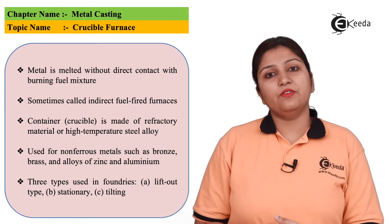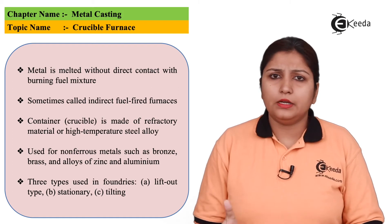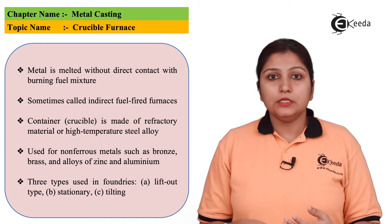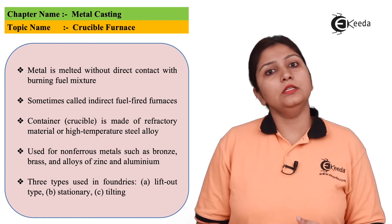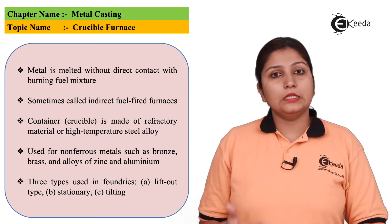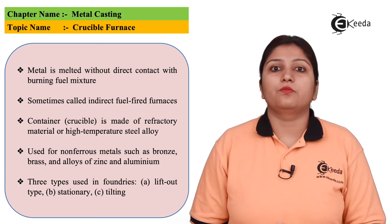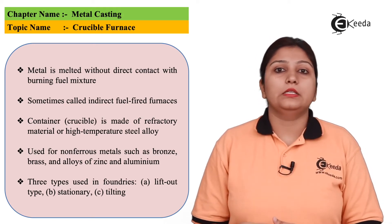We will classify the crucible furnace basically into three types. One is lifting, the second is stationary, and the third is tilting. We will go into detail and see the diagram of all three types of this crucible furnace in our next slides.